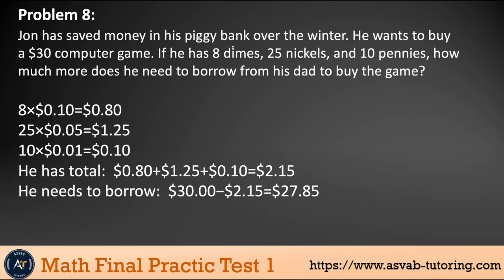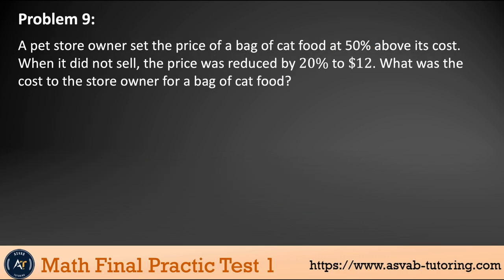So you could see is very simple. So he has eight dimes, right? So eight dimes is how much is that? Eight dimes, eight times 10, that gives you 80 cents and then 25 nickels. So if you multiply 25 with 0.05, that gives you $1.25 and he has also 10 pennies. So that is 10 times 0.1, that gives you 10 cents, right? And if you add them up, so that gives you $2.15, but he needs $30, right? So if you subtract from 30, that gives you $27.85.